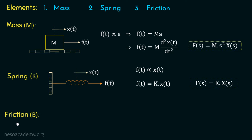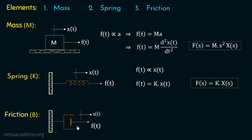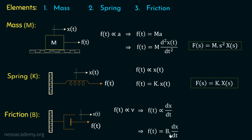Moving on to the next element, which is friction. Consider a dashpot attached to a fixed surface from one side; on the other hand we are applying a force f of t. The damper or dashpot represents the friction between two surfaces. If we apply a force f of t to the right, there will be a displacement x of t. The friction opposes relative motion, so the frictional force is directly proportional to velocity. We can write f of t is proportional to dx over dt, and removing the proportionality we get f of t equal to b multiplied with dx over dt.